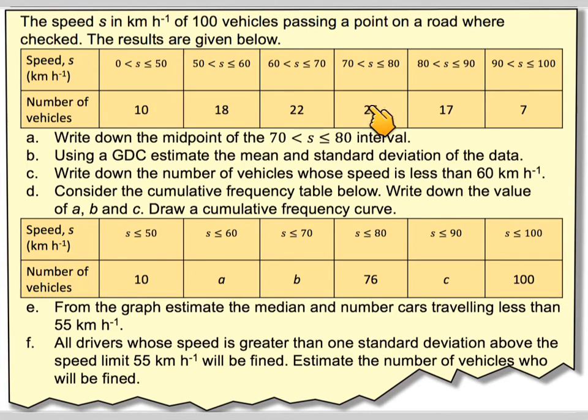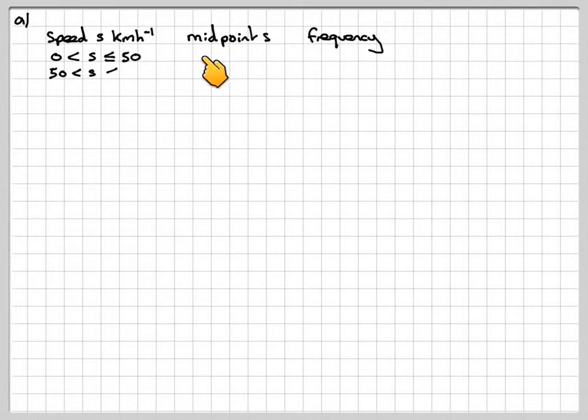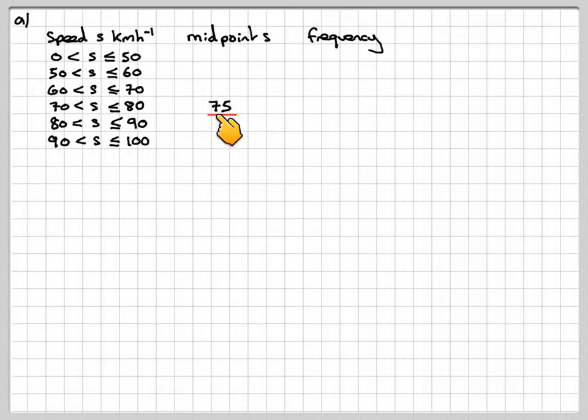So first of all, rearranging this table. And what we need to do is find the midpoints. Now the midpoint of this one is going to be, if you do 80 minus 70, that is 10. Half of 10 is 5. 70 plus 5, that gives a midpoint of 75. So this one is a bit different because its width is different. This one, the midpoint will be 25. So writing down all the midpoints, and then writing down all the frequencies.